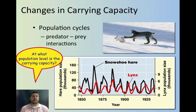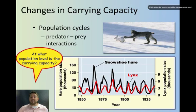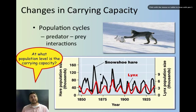You can also see changes in carrying capacity based on predator and prey. When the snowshoe hare is at a high population, not too long later the lynx population goes up — lots of hares for the lynx to eat. But then the lynx eat all the rabbits, so the rabbit population goes down. Low rabbit population, many lynx die off. No lynx around, the rabbits go up again. You see this oscillation pattern where when there are lots of rabbits there are lots of lynx, and when there are lots of lynx the rabbit population starts to go down.